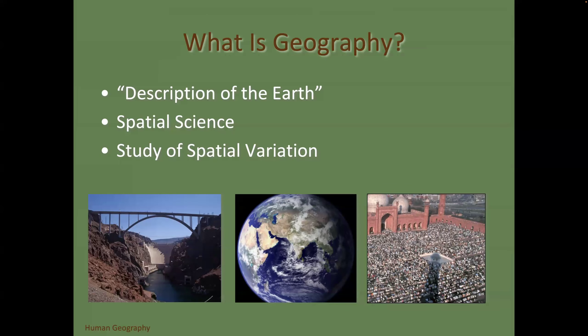What is geography? It's a description of the Earth. It is a spatial science — spatial implying location — and it is mostly a study of spatial variation: how things change within a particular geographic footprint, like religion, language, and culture.